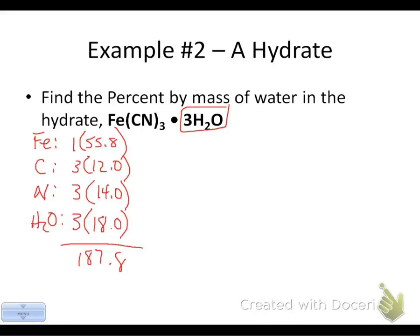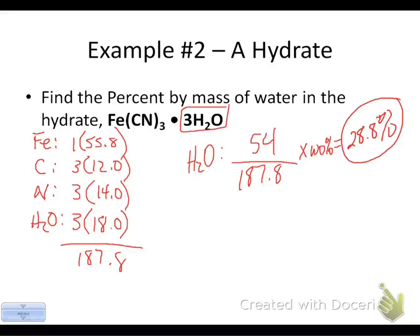All that adds up to 187.8 grams per mole. Now, if I'm just looking for the water, I don't have to go and do the percent composition for each of the other elements. This time, I'm just going to do the water. For water, its part is the three times 18, which is 54, over 187.8. We'll turn it into a percent, and I calculated it to be 28.8 percent for the water.